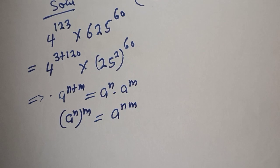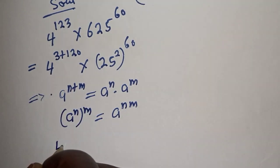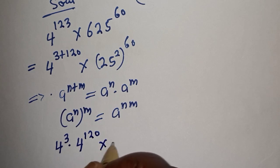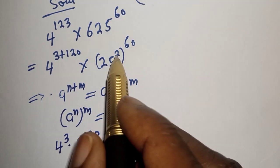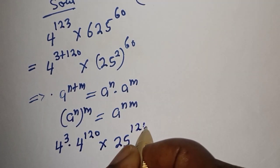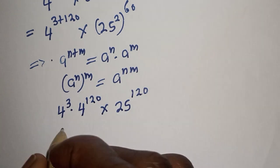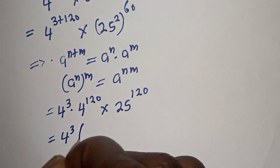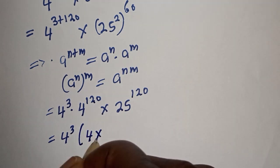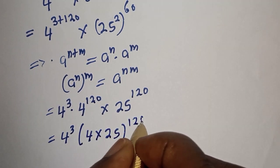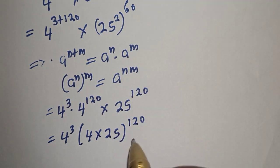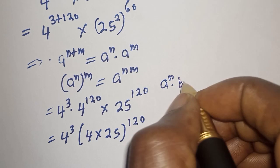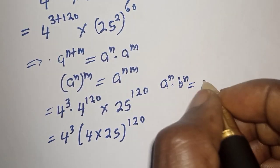Also, a raised to power n, to the power of m, equals a raised to power n times m. Using these rules, we can write 4 raised to power 3, multiplied by 4 raised to power 120, multiplied by 25 raised to power 2 times 60 — that is 120. From the exponential rule, a^n multiplied by b^n equals (ab)^n.